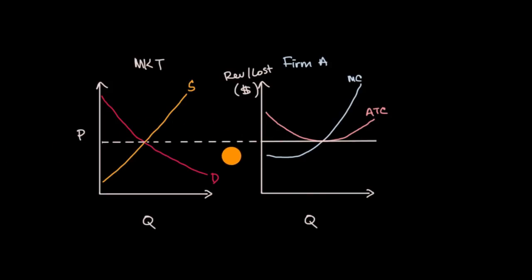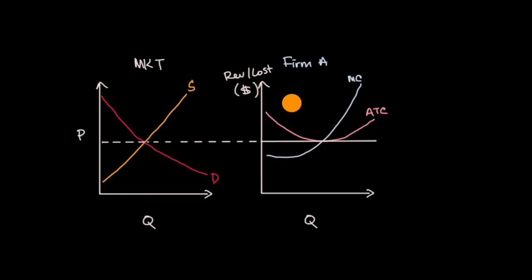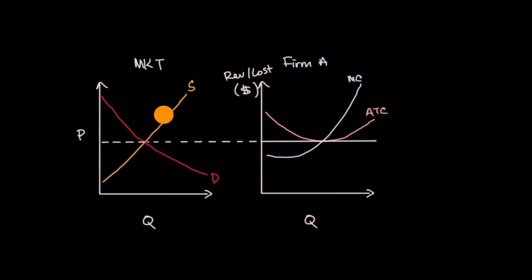What we have here we can view as a long-run equilibrium or long-run steady state for a perfectly competitive market. Let's say this is the market for apples in an idealized perfectly competitive situation where we have many firms producing — they're non-differentiated, they have the same cost structure, there's no barriers to entry or exit. On the left you can see that the equilibrium price, set by the intersection of the supply and demand curves, is the price that the firms have to take.